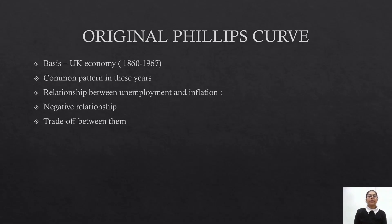What William Phillips found about these two things is that there is a negative relationship between unemployment and inflation. Whenever inflation will increase, unemployment will fall, and whenever inflation will fall, unemployment will increase. This is what a negative relationship is.